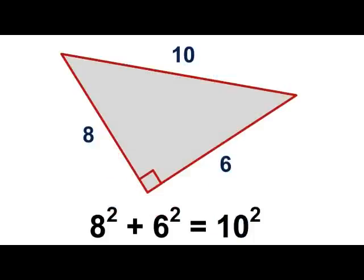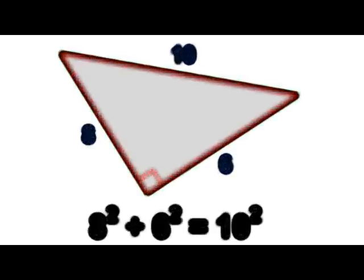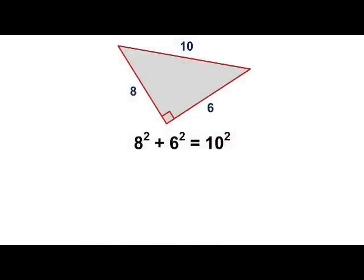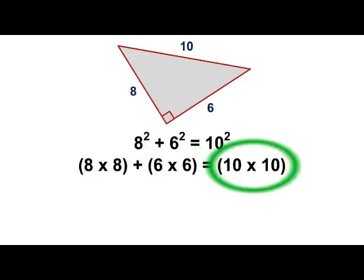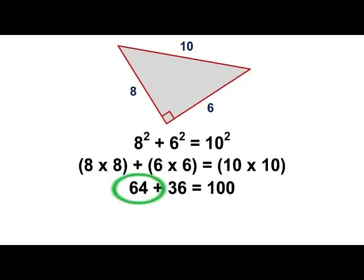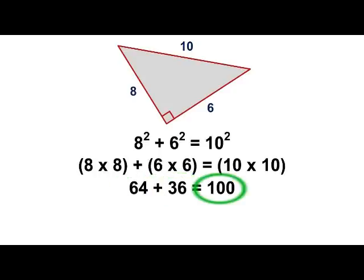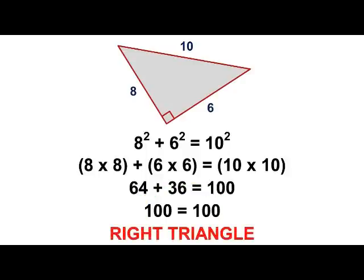So the equation will look like this. 8 squared equals 8 times 8, 6 squared equals 6 times 6, and 10 squared equals 10 times 10. 8 times 8 equals 64, 6 times 6 equals 36, and 10 times 10 equals 100. 64 plus 36 equals 100. So this is definitely a right triangle.